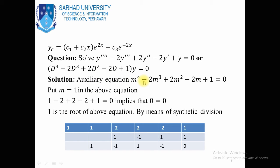Using synthetic division with root m = 1, the depressed equation becomes m³ - m² + m - 1 = 0. Putting m = 1 again: 1 - 1 + 1 - 1 = 0, which is satisfied. So m = 1 is again a root. Applying synthetic division once more, the depressed equation becomes m² + 1 = 0. This gives m² = -1, so m = ±iota.